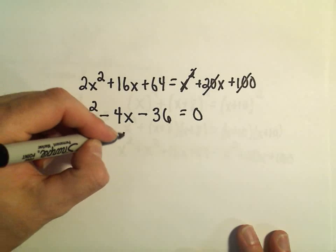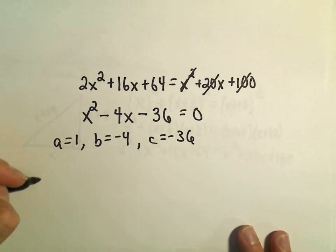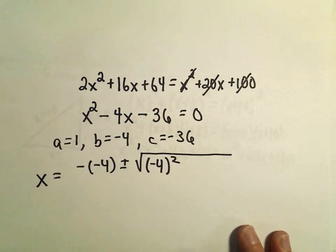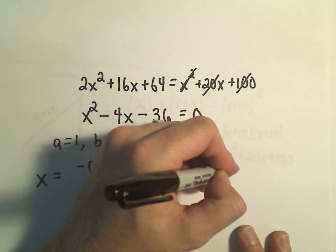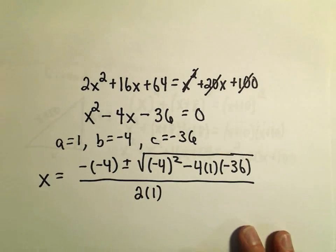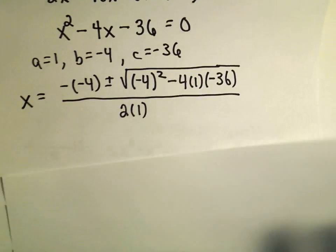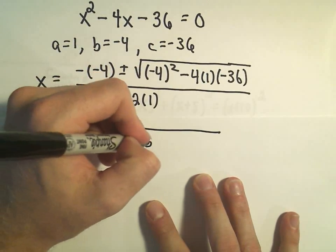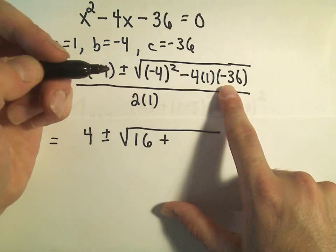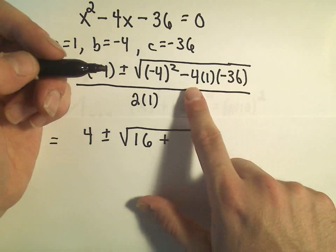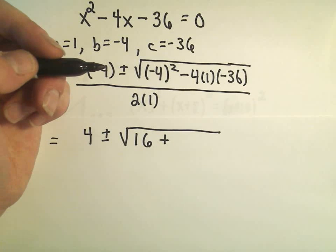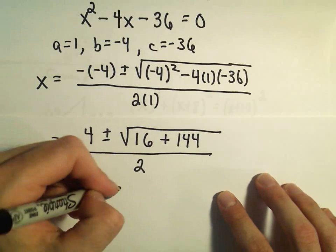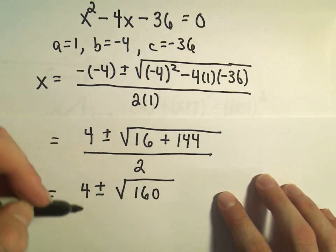So a has value 1, b has value negative 4, and c has value negative 36. The quadratic formula says we take negative b plus or minus the square root of b squared minus 4 times a times c, all over 2 times a. So we've got negative negative 4, which is positive 4. Negative 4 times negative 4 is positive 16. We've got a negative times a negative so that's a positive — 4 times 36: 4 times 30 is 120, 4 times 6 is 24, so 120 plus 24 gives us 144. So we have 4 plus or minus the square root of 16 plus 144, giving us the square root of 160, over 2.